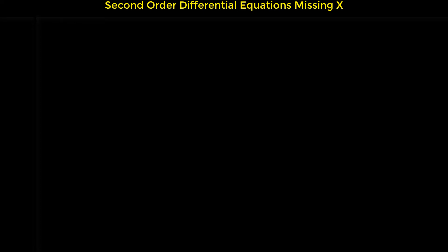In this video I'm going to show you how we can solve second order differential equations missing the x. Consider this differential equation: y·y'' + (y')² = 0. As you can see, in this differential equation we don't have any x — x doesn't appear. Usually the independent variable in a differential equation is x, but here x is not present.